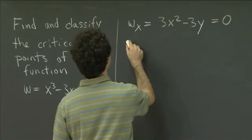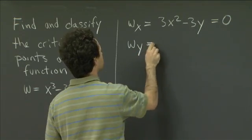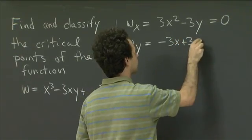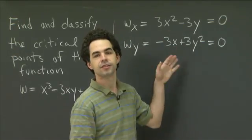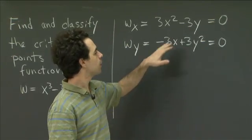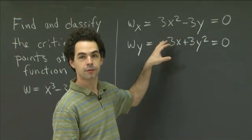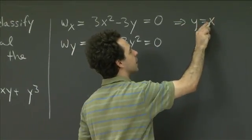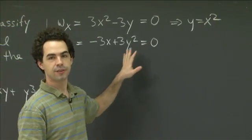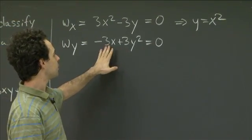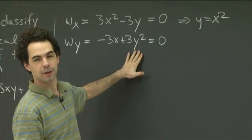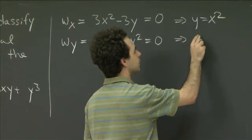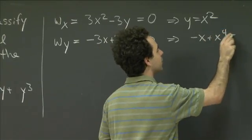Similarly, we want the first partial with respect to y, w sub y, to be equal to 0. That's minus 3x plus 3y squared equals 0. These are fairly simple equations. To solve them, we take the first equation and solve for y in terms of x, which gives us y equals x squared. Now if we plug y equals x squared into the second equation, we get minus 3x plus 3 times x squared squared, so that's x to the fourth, equals 0. Dividing out by 3 gives us minus x plus x to the fourth equals 0.